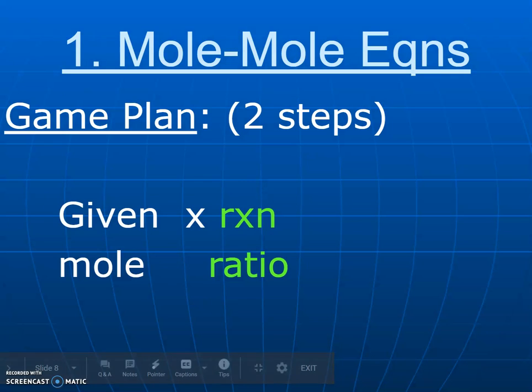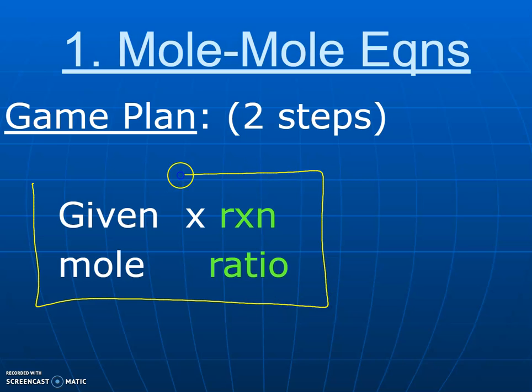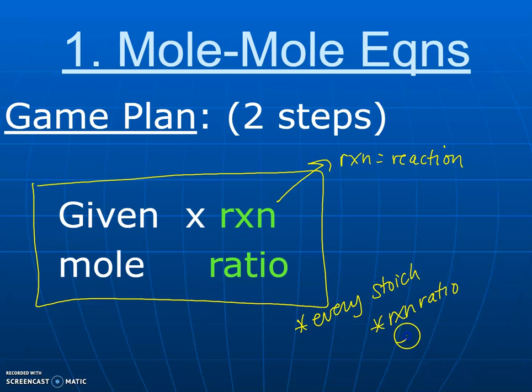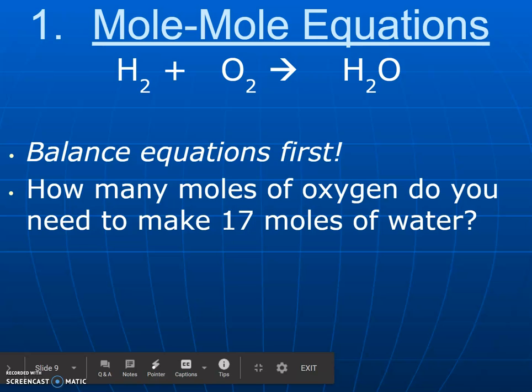If you want to highlight what you do during a mole-mole equation, you would start with your given, and then you would use the reaction ratio. Every single stoichiometry problem is going to use the reaction ratio. You need to use that balanced equation in order to figure out what the mole-to-mole relationship is between your given and your unknown. Then you can use your dimensional analysis in order to convert everything and make sure that things cancel out.